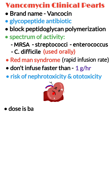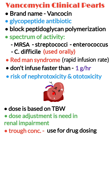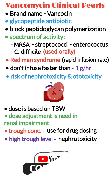Dose of vancomycin is based on total body weight, and dose adjustment is needed in renal impairment. Trough concentrations are often used for vancomycin drug dosing, and recent data indicate that higher troughs may be associated with nephrotoxicity.